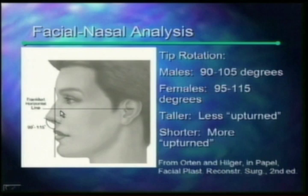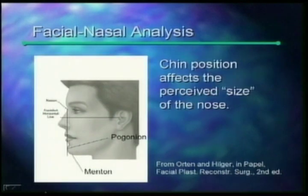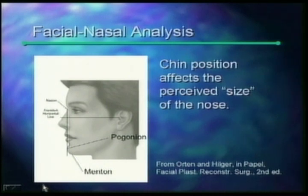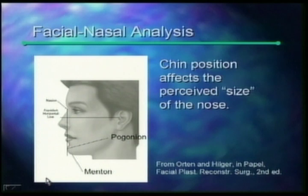Furthermore, the patient's height is inversely related to the amount of rotation that we seek. A taller person might look too upturned if they had too much tip rotation, and likewise, a shorter person might look like they are too downturned if they don't have enough. An important aspect of nasal analysis really doesn't have much to do with the nose itself — it has to do with the position of the chin. Chin position affects the perceived size of the nose. So often the chin is addressed at the same time as rhinoplasty surgery.